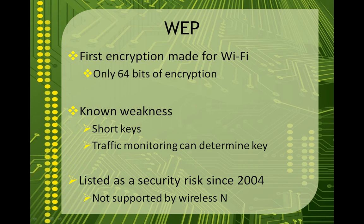The most basic type of encryption for your wireless network is WEP. This was the first encryption made specifically for Wi-Fi and it was developed at the same time that Wi-Fi was developed. It's been around for quite a while, and the government limited the strength of encryptions available to the public at the time of its development. Therefore, it only uses 64 bits of encryption.